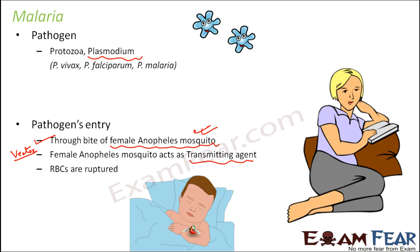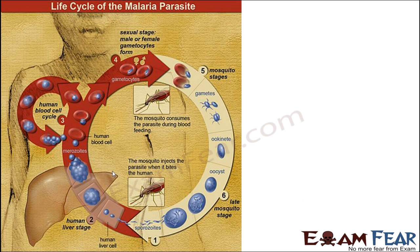Once the pathogen — plasmodium — enters the body, it will affect the red blood cells. The red blood cells get ruptured, and that is how gradually malaria spreads throughout the body. Before we talk about the symptoms and treatment of malaria, let us look at the life cycle of the malarial parasite, which is plasmodium.